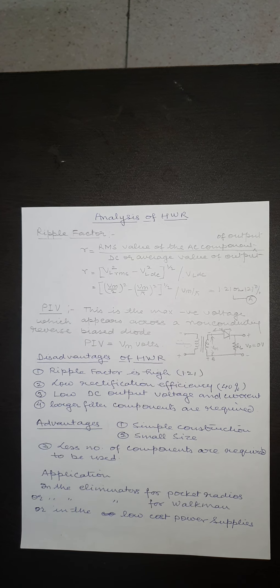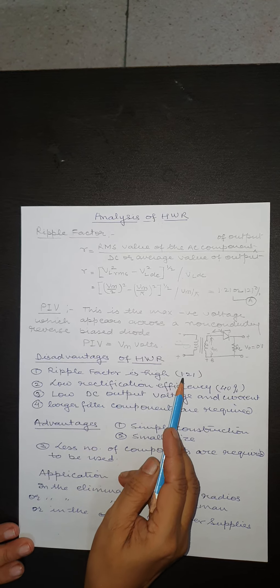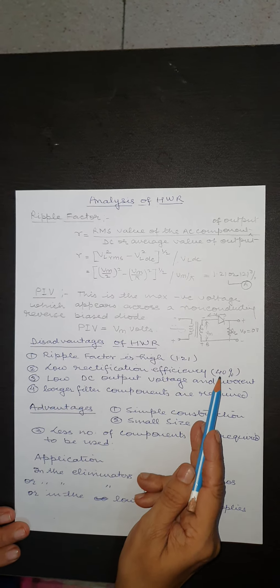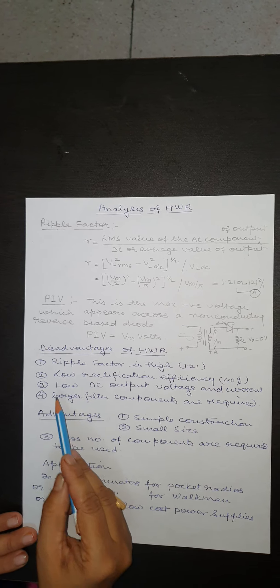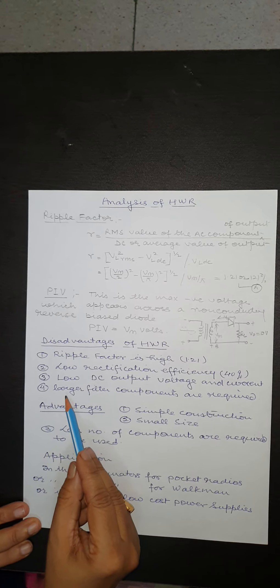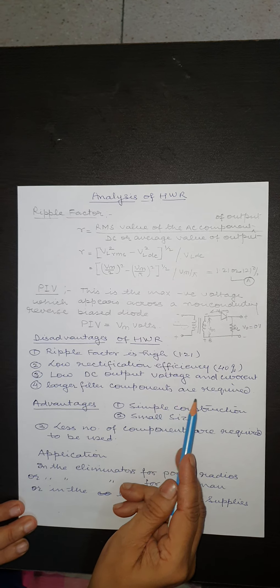Disadvantages of half-wave rectifier: ripple factor is high at 1.21, second low rectification efficiency approximately 40%, third is low DC output voltage and current, fourth is larger filter components are required.